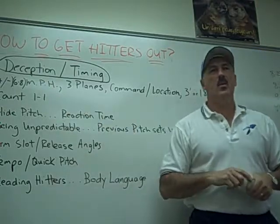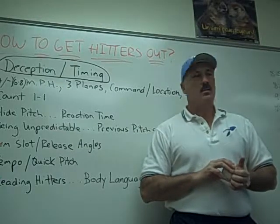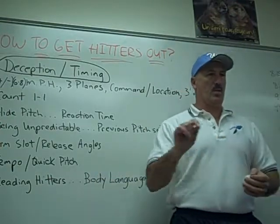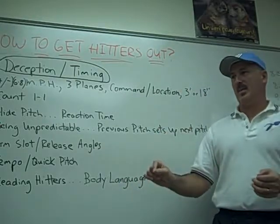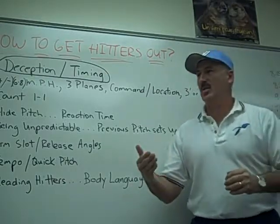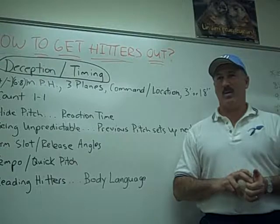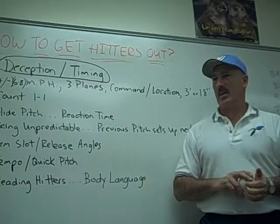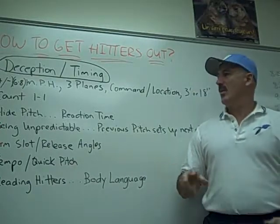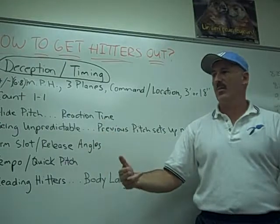The count — one and one. Why is that such an important count? If you throw a ball after one and one, that makes it two and one. If you throw a strike, it becomes one and two. It has been shown that a hitter ahead in the count at two-one bats close to .300. A hitter at one-and-two bats about .190. Who would you rather face? I'd rather face the guy hitting .190 with two strikes. So after a one and one count, the next pitch — get a strike. Very, very important.